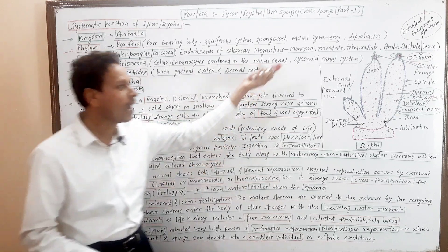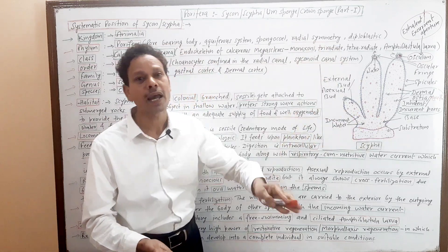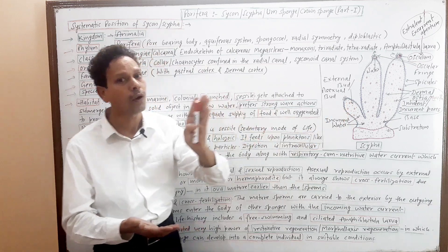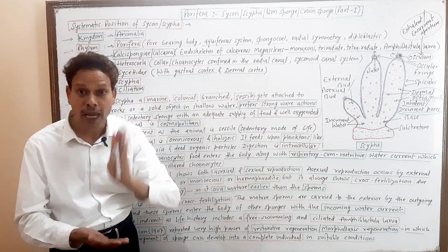Locomotion: We said the entire body, look here, the body is sessile, the body is sedentary, means no locomotion. Locomotory organs and organelles are absent.